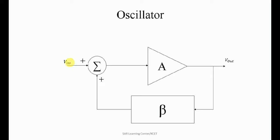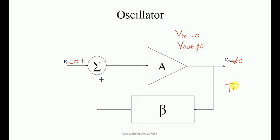In an oscillator, it produces a wave with respect to feedback signals only. Here, V-in equals 0 but V-out is not equal to 0. How is this possible? In this amplifier circuit, it has thermal noise. This thermal noise contains all frequency components. These frequency components are applied to the feedback circuit, and the feedback network selects the desired frequency and maintains the sustained oscillation.